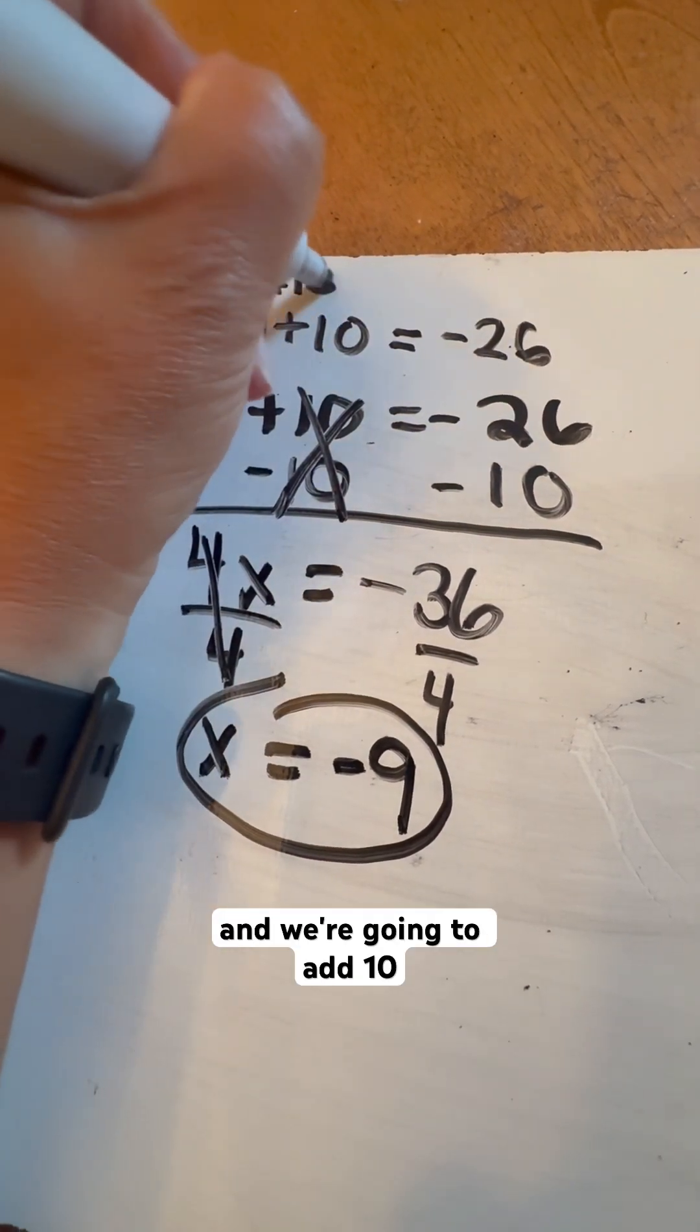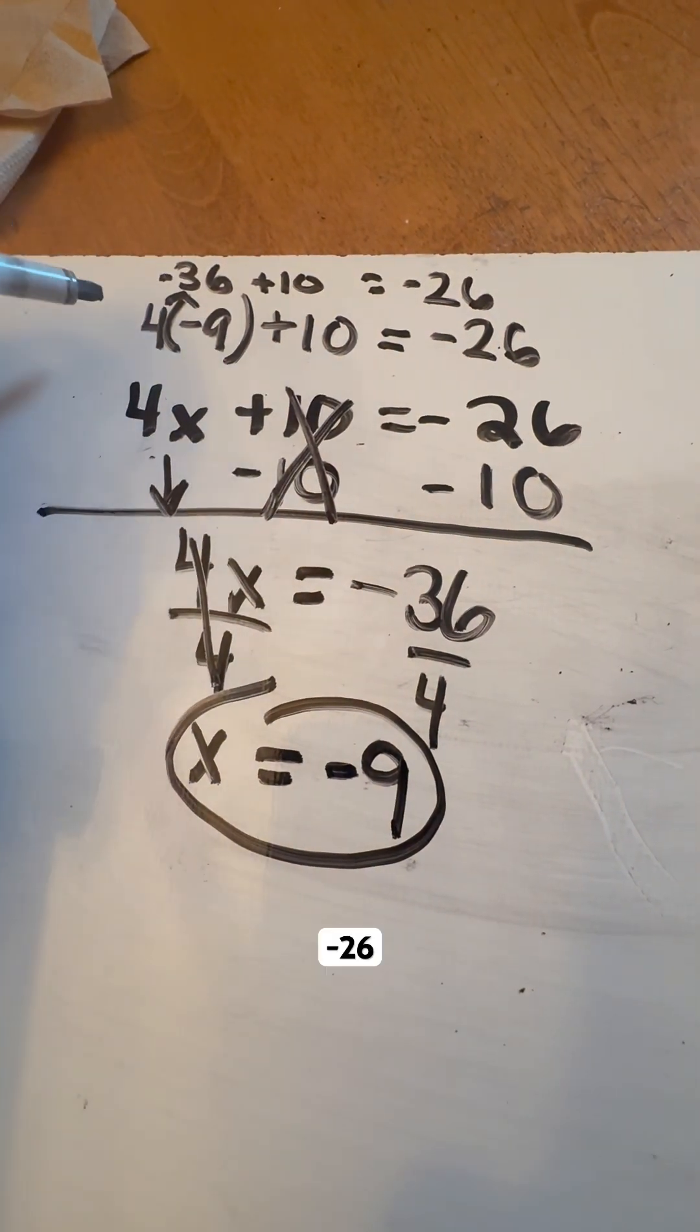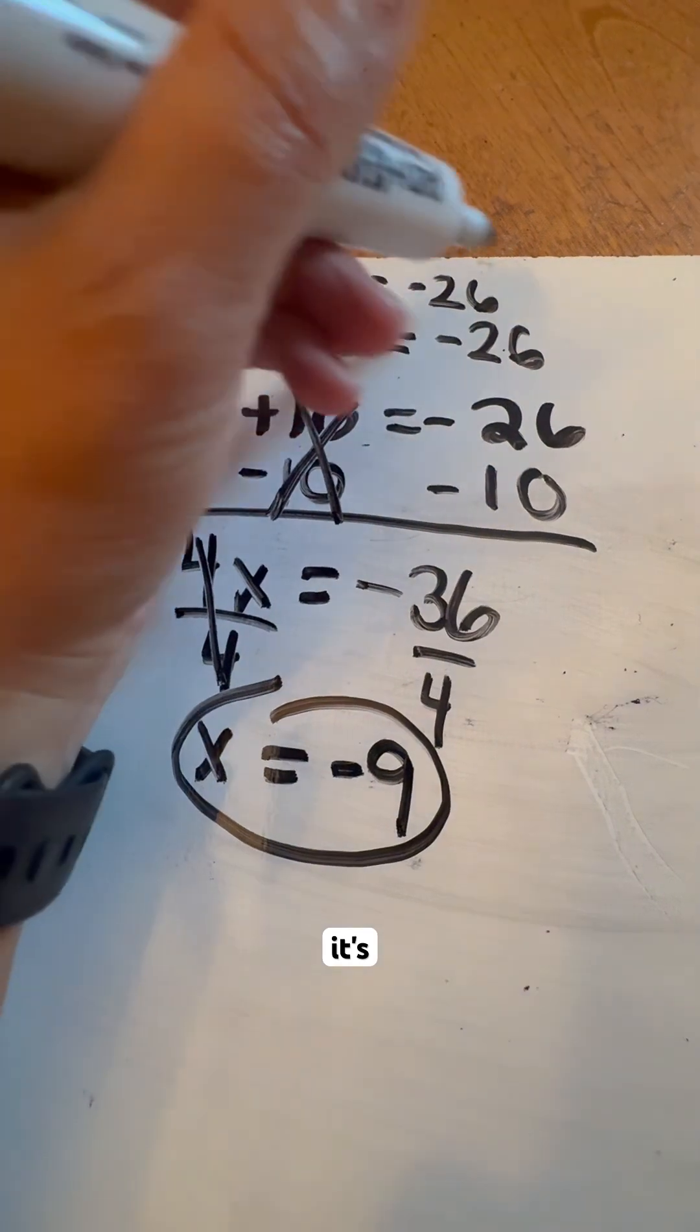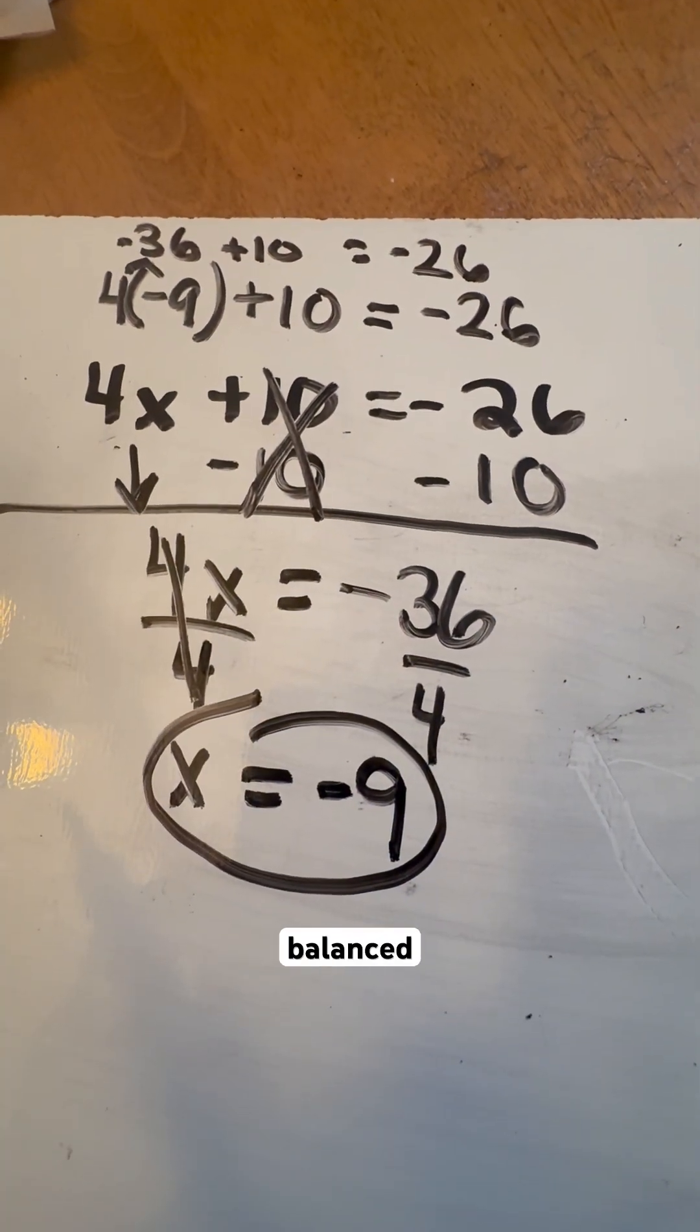And we're going to add 10 to it. And it indeed does make it negative 26 on this side. It's negative 26 on this side, which means I did do it correctly because both sides are balanced out.